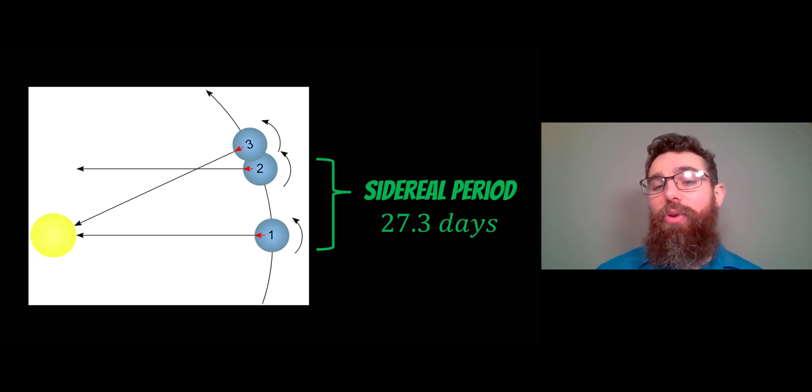That is approximately two days shorter than the synodic period, which is the lunar phase. So it's actually this one we want. 27.3 days is the orbital period we actually want to do this calculation.